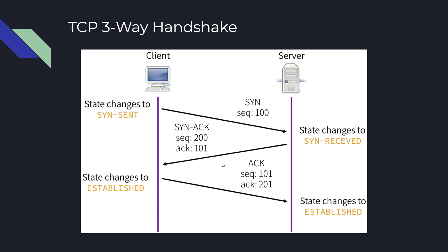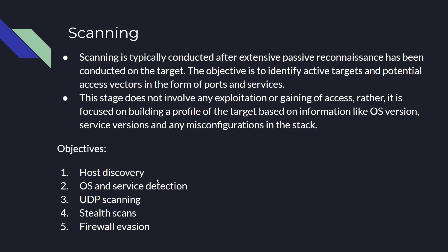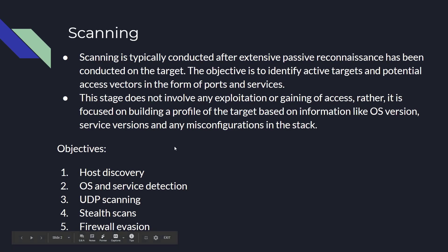Now that we have an understanding of the TCP three-way handshake, we can get started with Nmap, which we'll cover in the next video. We'll start off with host discovery, then move on to OS and service detection, UDP scanning, stealth scans, firewall evasion, and finally the Nmap Scripting Engine — which I want to give its own module because it's quite complex and very useful, tying in to enumeration and vulnerability scanning.